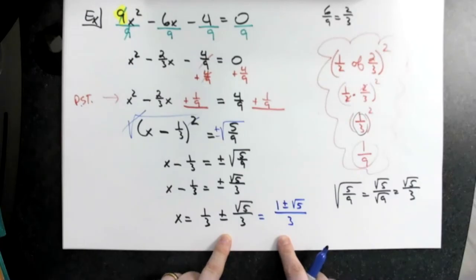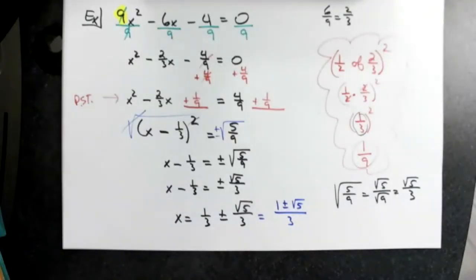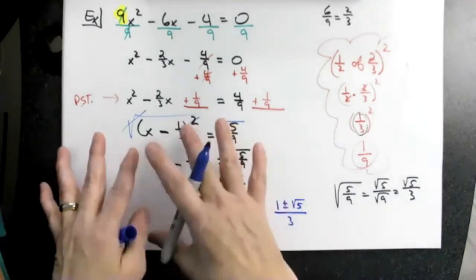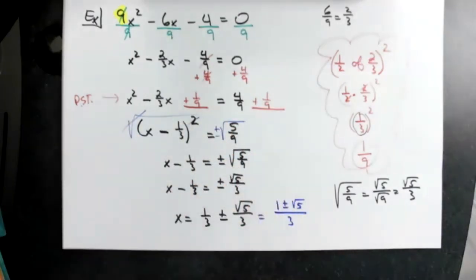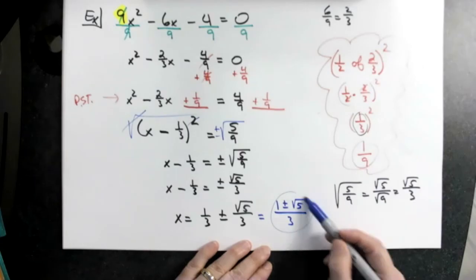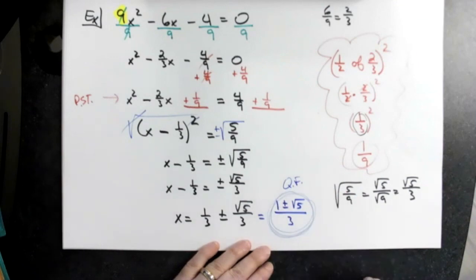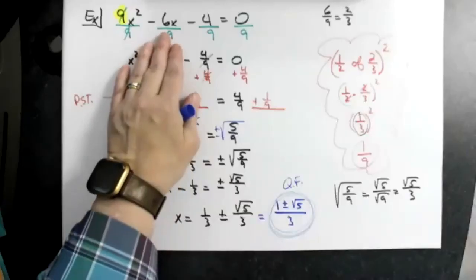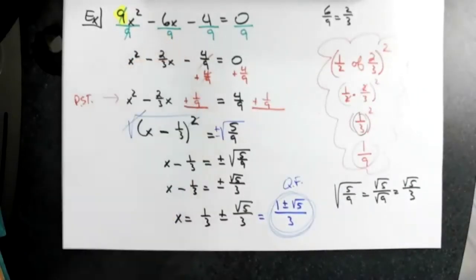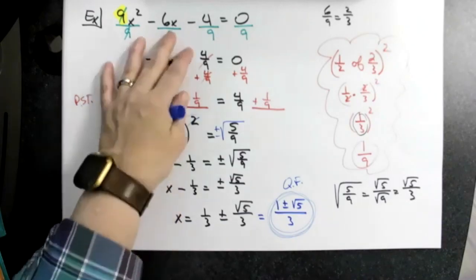Now think about this: if we can start with a quadratic and solve it in a variety of different ways—we can factor it, we use square root principle, this was completing the square—but the other method, which we haven't done in this class but I know you've done it before, is the quadratic formula. Doesn't this look like an answer that you would have gotten if you had done the quadratic formula? And it better be, right? I better be able to take this quadratic, do the quadratic formula, and get the exact same answer because it's the same equation. But this is just completing the square.